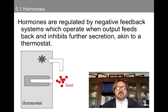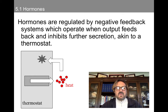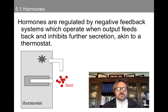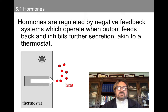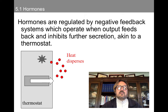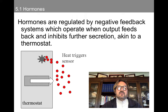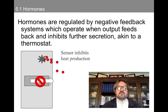Now I want to talk about negative feedback loops. Negative feedback loops are in general the plan for how hormones regulate their release — hormones are regulated by the negative feedback system, which operates when output feeds back and inhibits further secretion. This is akin to a thermostat: it gets cold and the thermostat supplies heat. Heat diffuses down its concentration gradient from the hottest corner of the apartment to the coolest, and at some point it hits a sensor. The heat triggers the sensor, and the sensor actually turns off the heat generator, inhibiting further heat production.